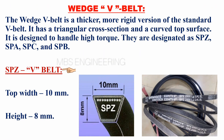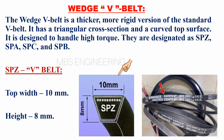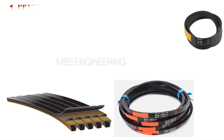We will understand the SPZ V-belt. The top width of the SPZ V-belt is 10 millimeters. The height of the SPZ V-belt is 8 millimeters. Please take a look at the figure that shows the SPZ V-belt.